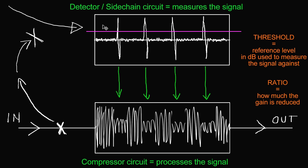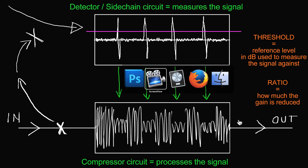The kick drum comes into the detector sidechain circuit, and every time the kick goes over threshold it sends the control voltage — boom boom boom boom — turning down the drone synth. The drone synth is turned down at those points where the kick triggers the compressor. Now, this is called ducking — that's what people call sidechaining — but the actual term is ducking, because the kick drum is ducking the level on the drone synth.